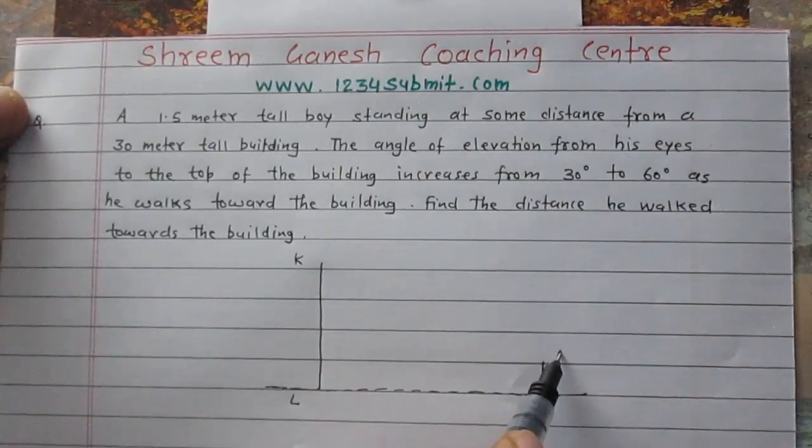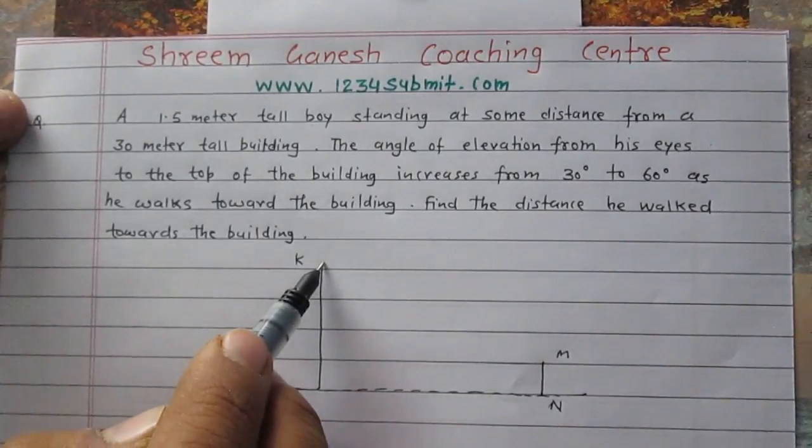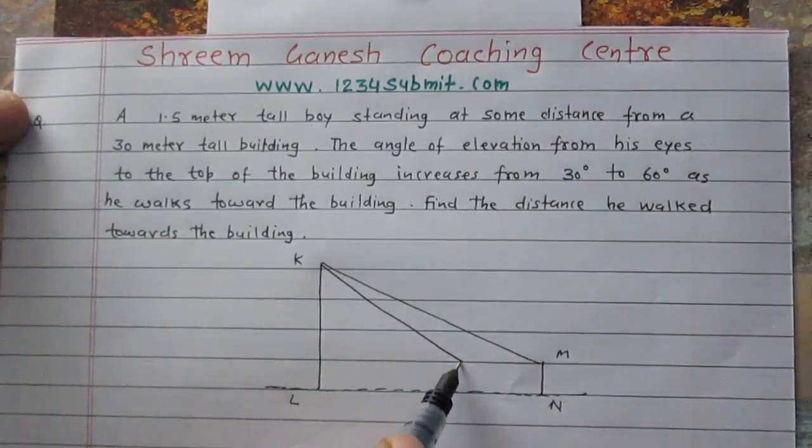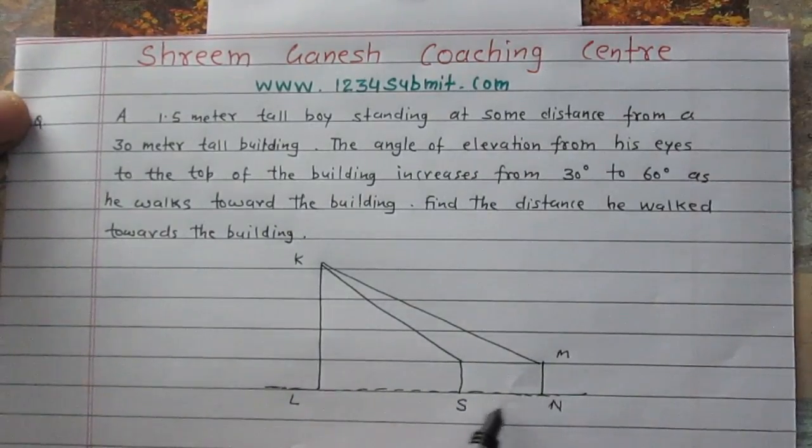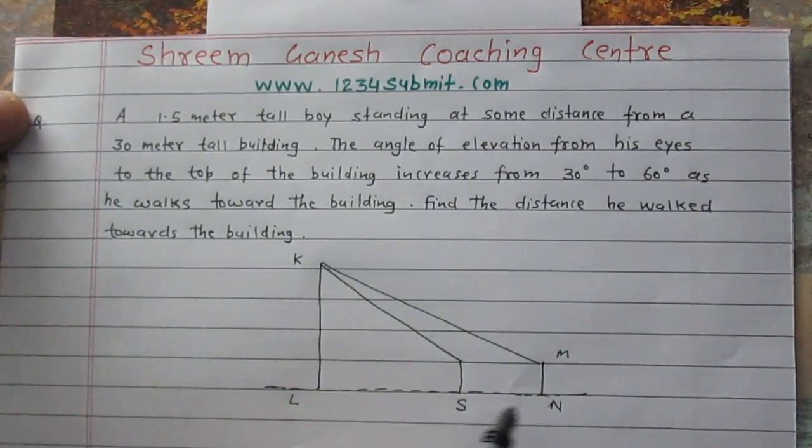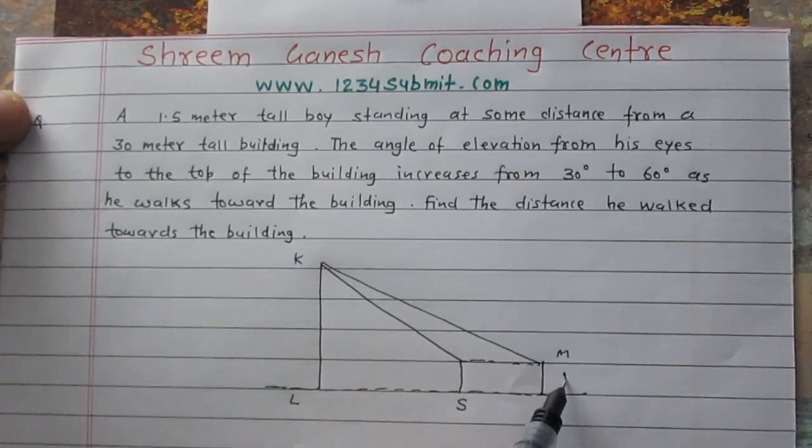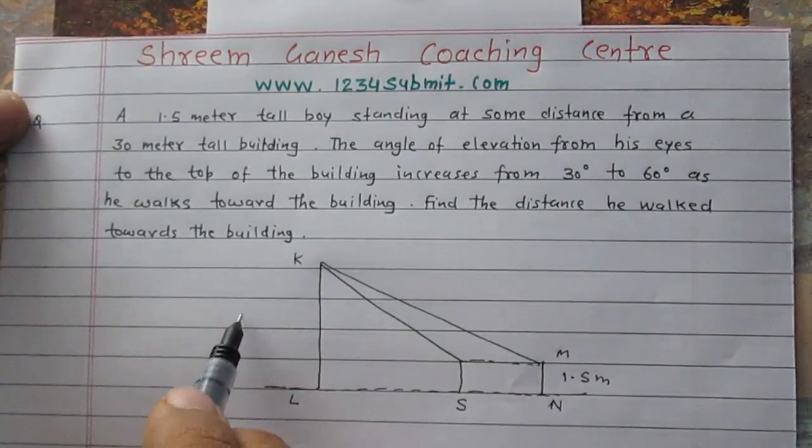The line segment KL represents the building. Line segment MN represents the boy. Suppose the boy has traveled the distance NS. The line segment NS represents the distance he walked.